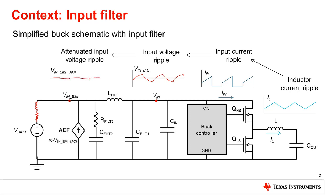AEF works by sensing the supply voltage ripple and injecting a signal proportional to the inverse of the ripple to cancel it out. If VIN EMI ripples up, AEF sinks current to bring it back down. If VIN EMI ripples down, AEF sources current to bring it back up. It's essentially resisting changes in voltage, which is exactly what a capacitor does, but AEF has the ability to sink and source current at the scale of a very large capacitance while being constructed from small, inexpensive circuitry.